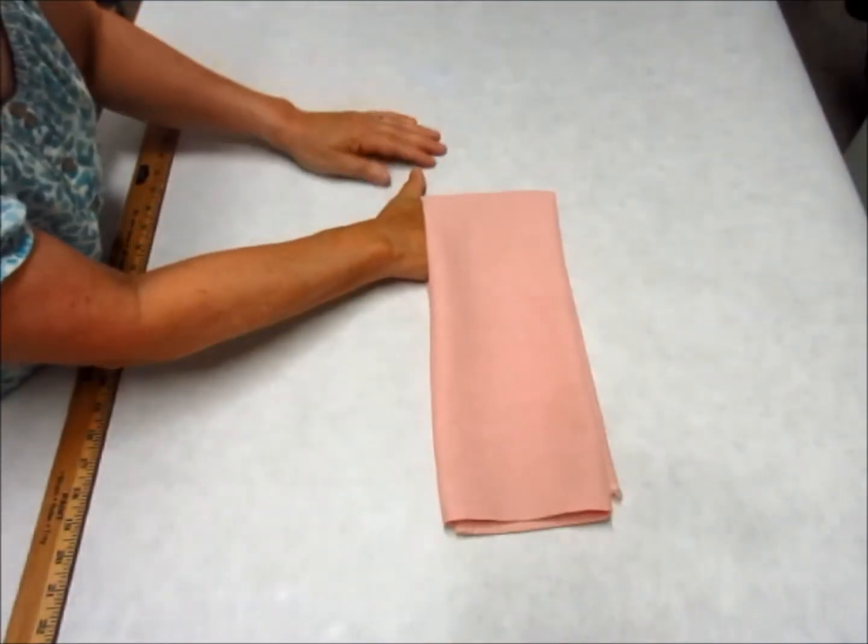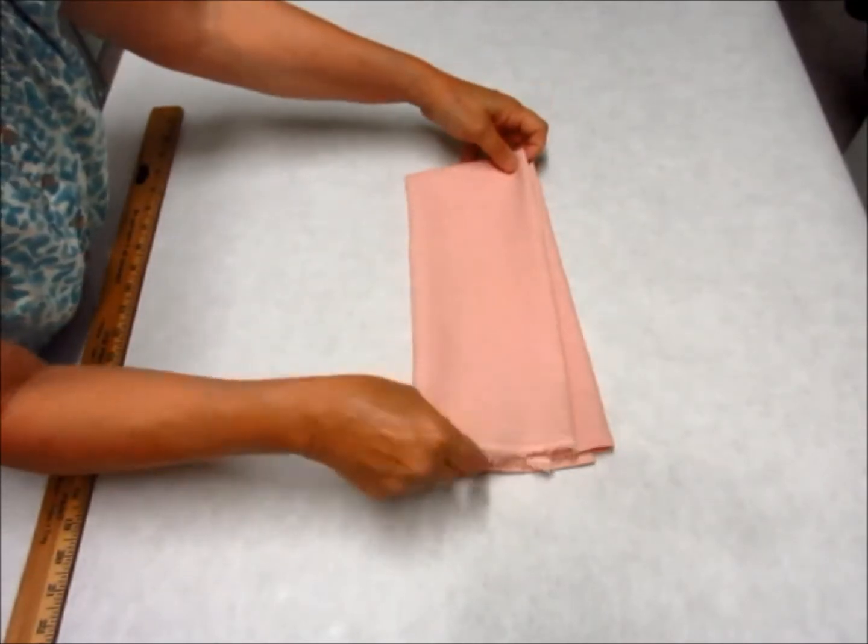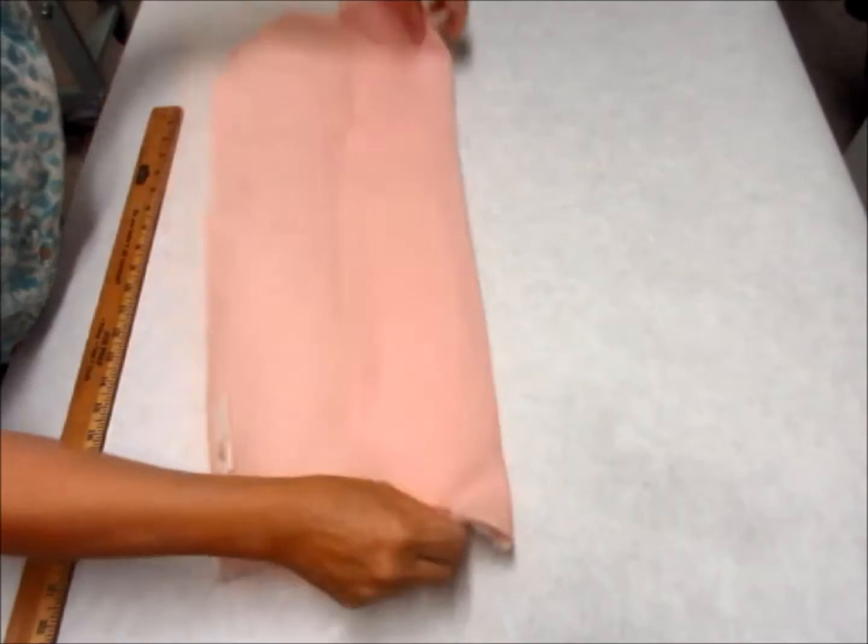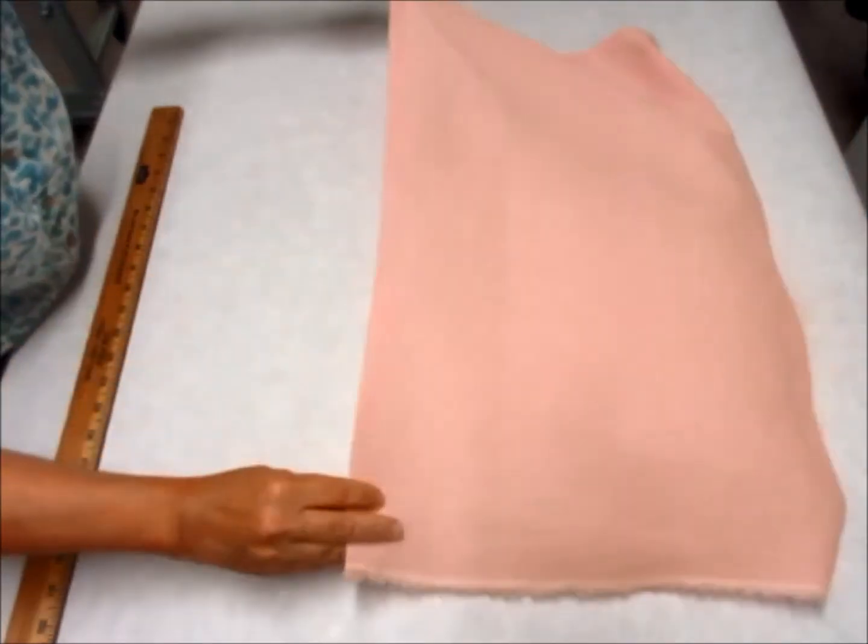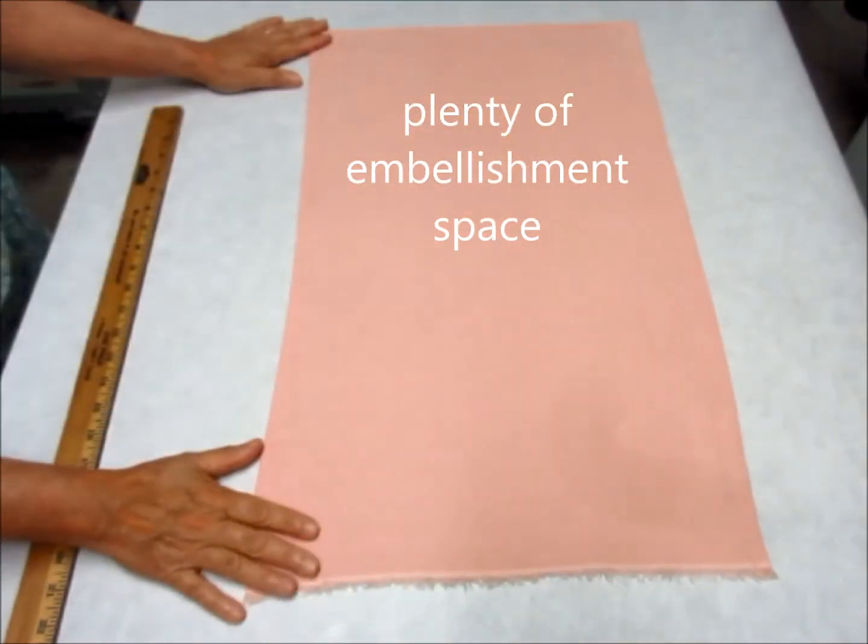You can lay that with the hem side out or you can put it with the selvedge side out. There's plenty of space here for embroidery or painting, whatever you choose to do, so you've got a nice field or you can just use it plain.